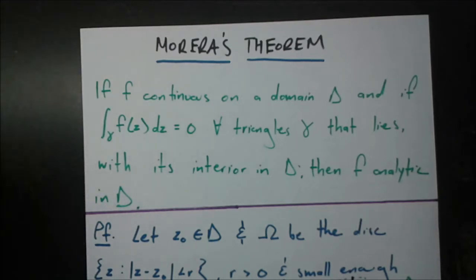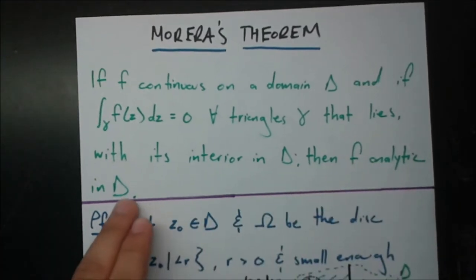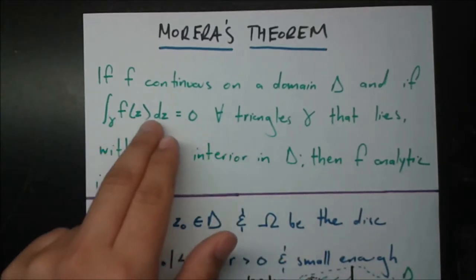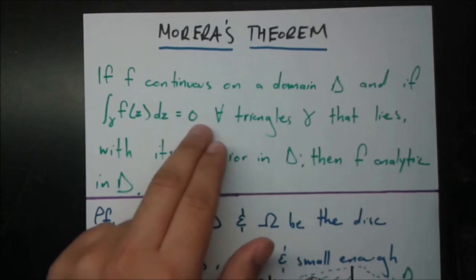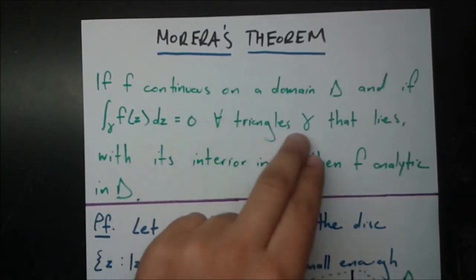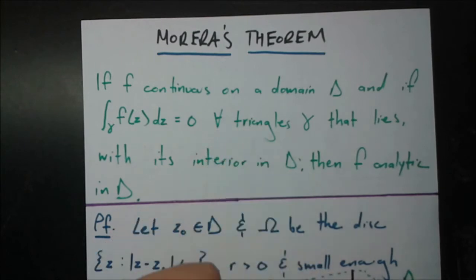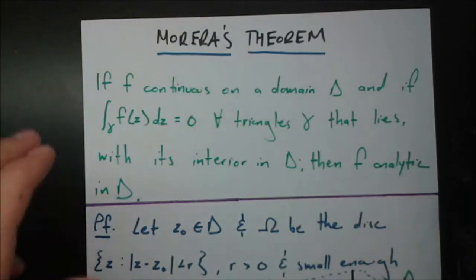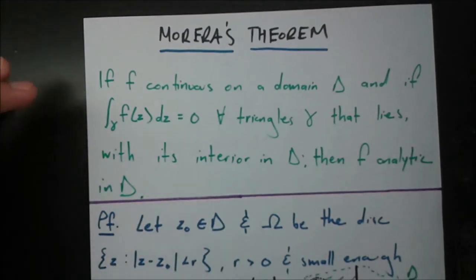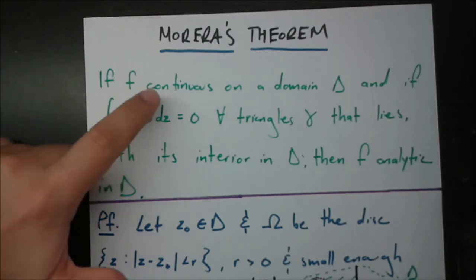Remember what Cauchy's theorem said? Cauchy's theorem said that if f is analytic in D, then the integral of f(z) dz over gamma equals 0 for all closed loops. A triangle is just one form of closed loop, and the reason we have triangles here is because really all kinds of curves can be made of infinitely many triangles. So we just have to prove it for triangles, and then we've proved it for all curves.